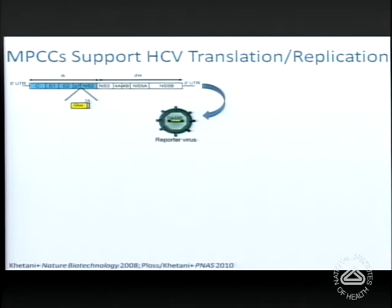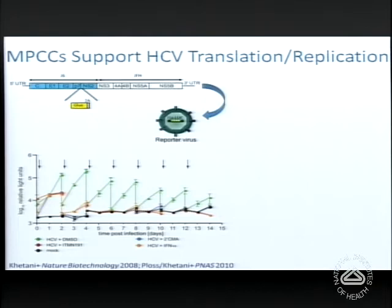We also developed a replication assay using a cell culture-adapted version of HCV genotype 2A — a reporter virus where every time the viral genome gets translated, we get secreted Gaussia luciferase in the media, readable on a luminometer for an automated readout. We see persistent infection of these cultures, now routinely getting about three to four weeks. Adding protease or polymerase inhibitors or treating with interferon alpha shows a specific response. One can now look at dose-dependent inhibition of viral translation and, importantly, study combination therapies in vitro.